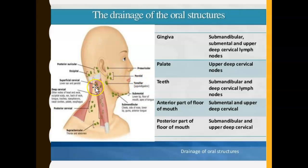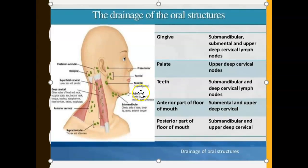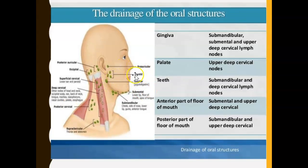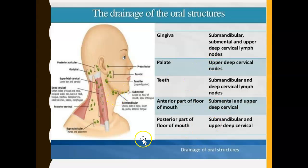The majority of your teeth get drained into the submandibular lymph nodes. There are vessels, channels, and tubes all around the teeth, and they have to drain somewhere — in this case, it's the submandibular nodes.